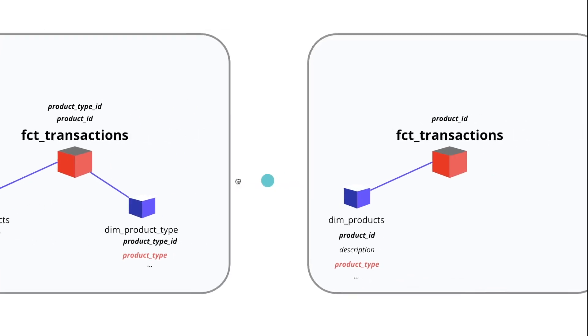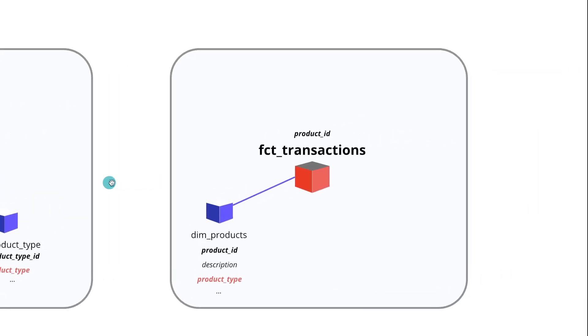Option two — which I would recommend — is to just have a single dim product table and add the product type as a column within it. That way you have just one join to the dim product table. It's a little bit wider; maybe you need to add a couple of type columns, but ultimately that simplifies your modeling. In the scenario where the type changes, you can still handle that as a slowly changing dimension, but in that case your dim products table would be the one that's slowly changing.